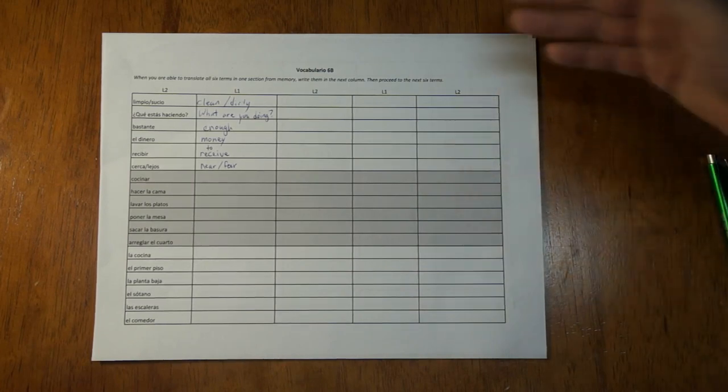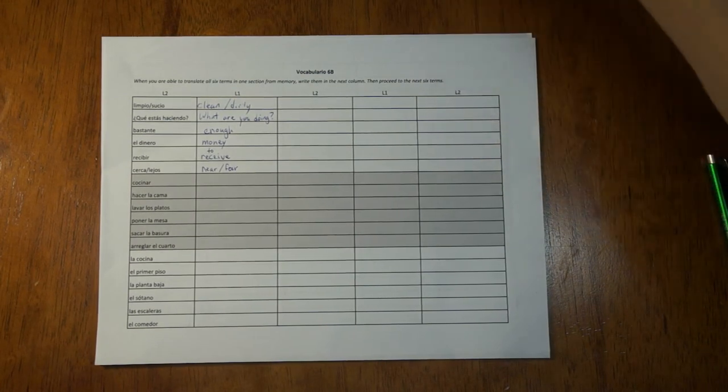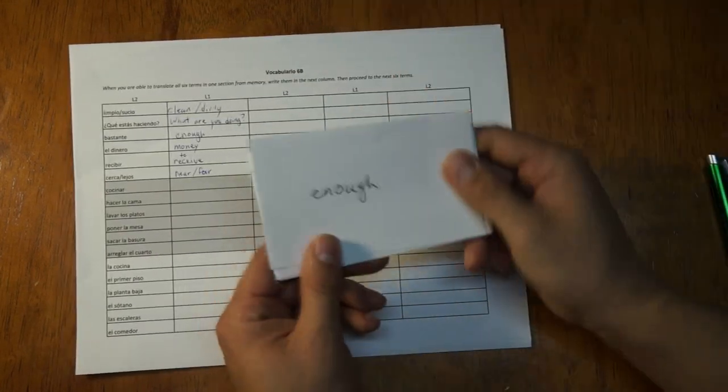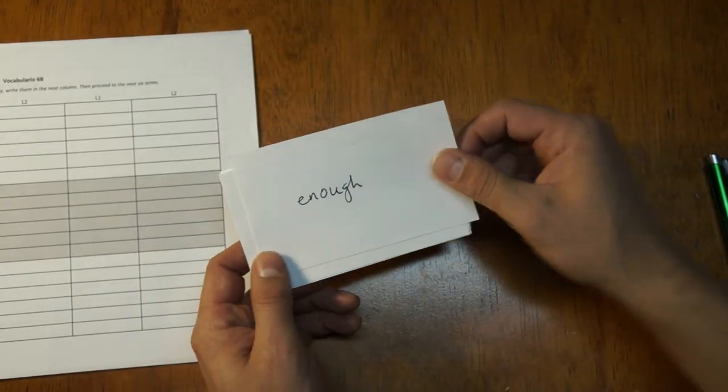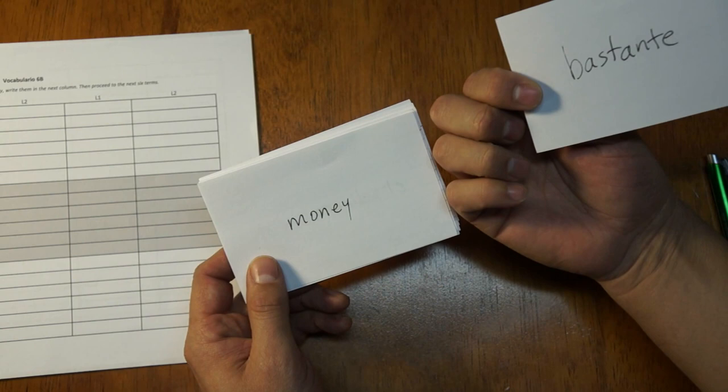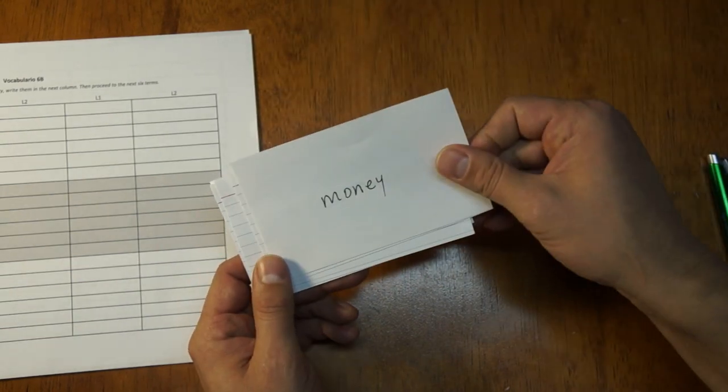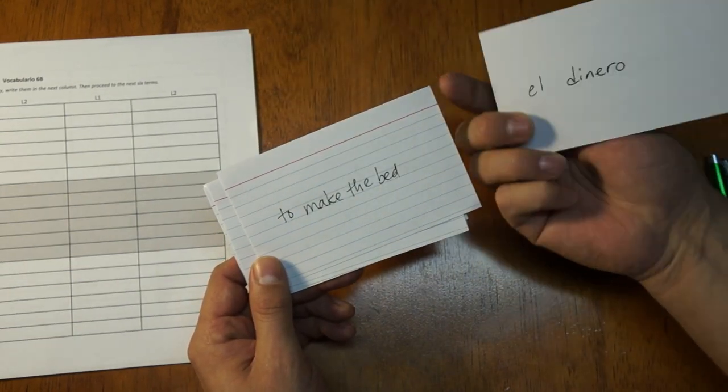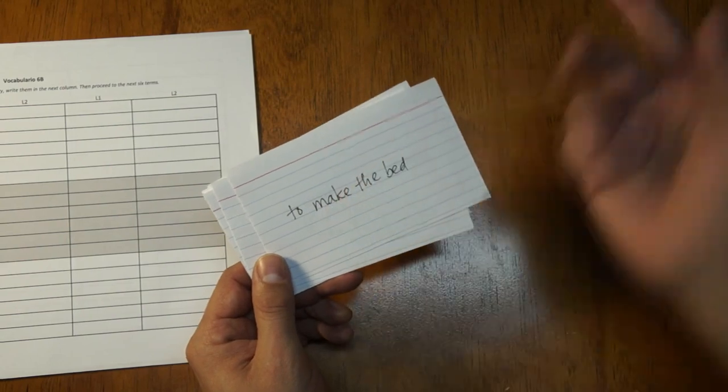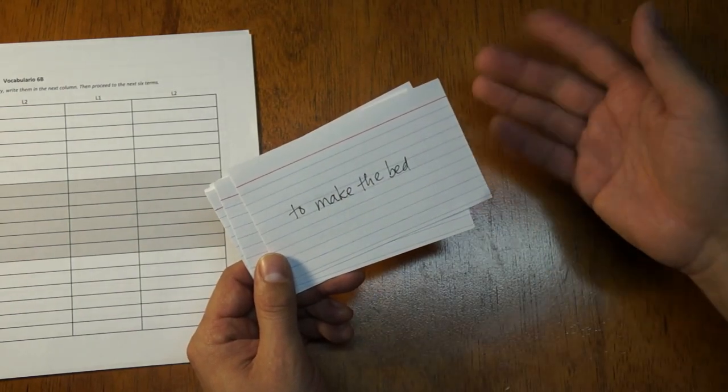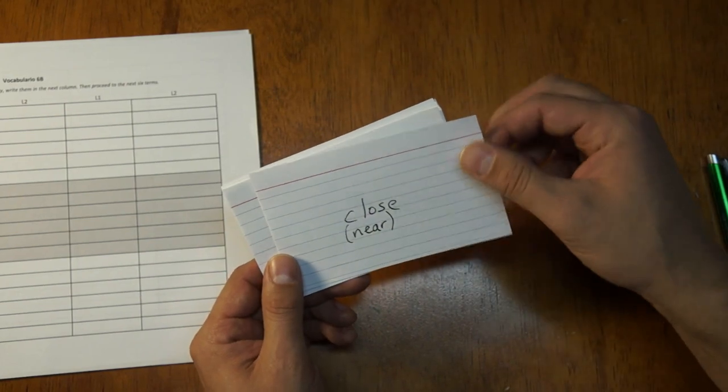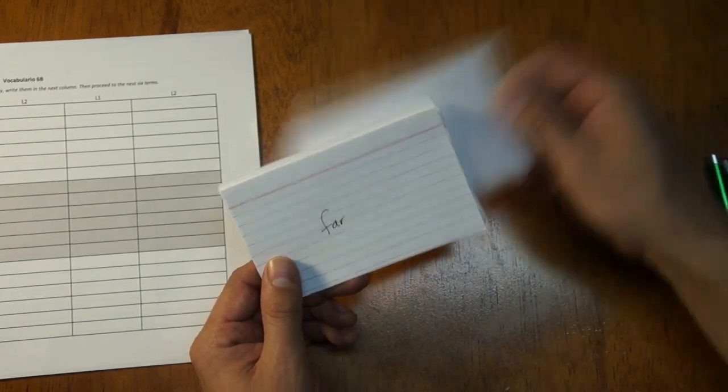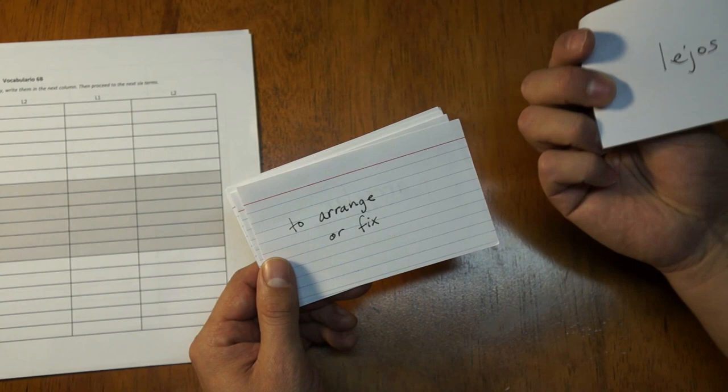So why is this so much more effective than regular flashcards? Well, I'll show you the problem with regular flashcards. If I have the word enough right here, I have to turn around and go, oh yeah, bastante. Then money. What's money in Spanish? El dinero. I knew that. Okay. To make the bed, something, something, cama. Oh yeah, hacer la cama. Close, near is cerca. Far, I forget. I don't know. Oh yeah, lejos.